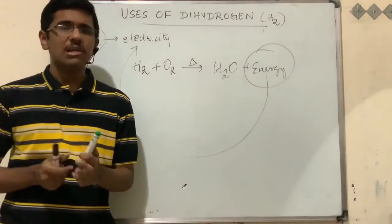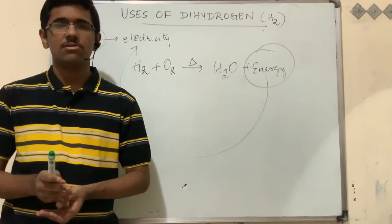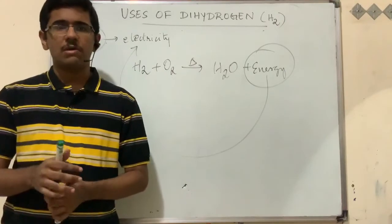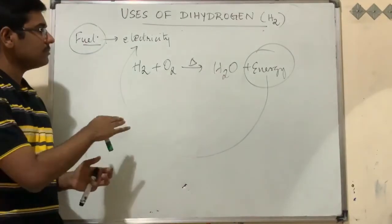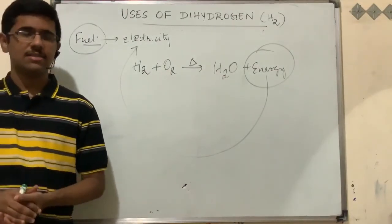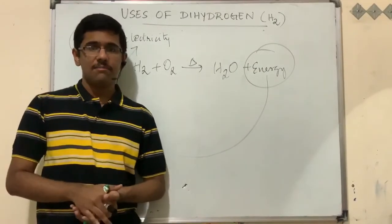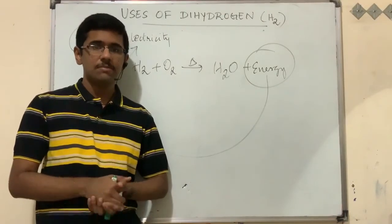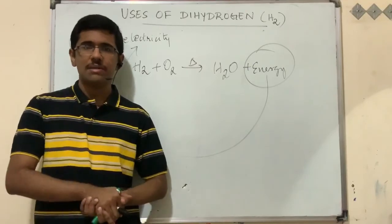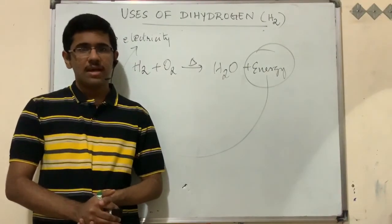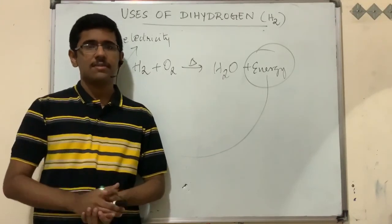These are the many important uses of dihydrogen we have discussed. Hydrogen gas is also important in life processes since the hydrogen element is present in our bodies. Next we will be discussing hydrides — metallic hydrides and different types of hydrides — in the upcoming video. Please like, share, and subscribe. Thank you.